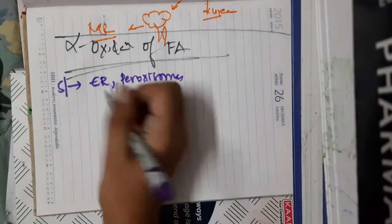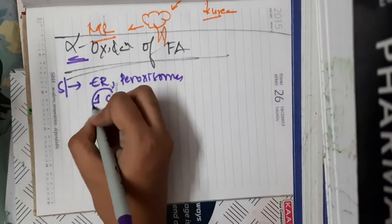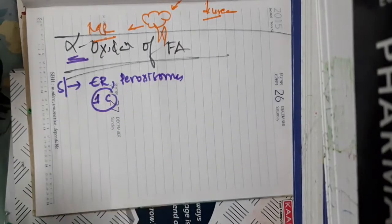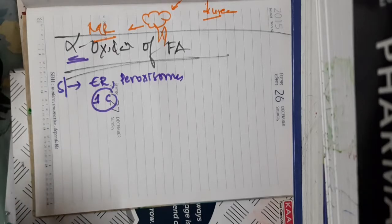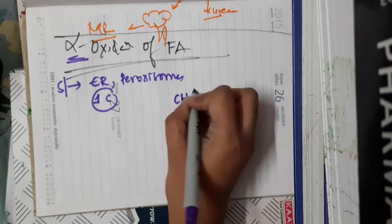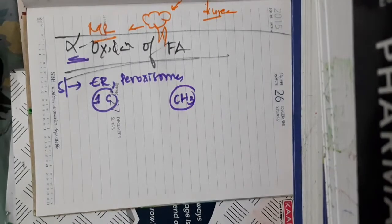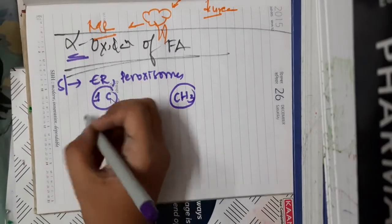There is alpha carbon, so from the alpha carbon, there is removal of one carbon at a time from the alpha carbon. For oxidation of branched chain fatty acid, we will remove one methyl group at branched points at a time.